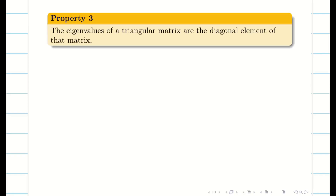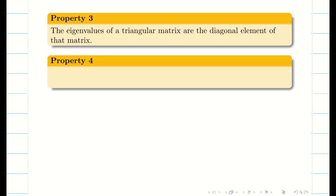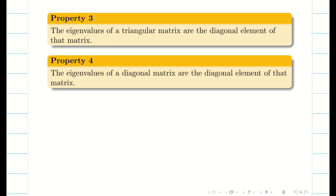The eigenvalues of a triangular matrix are the diagonal elements of that matrix. That means if the matrix is either a triangular matrix or a diagonal matrix, the diagonal elements are going to be the eigenvalues.